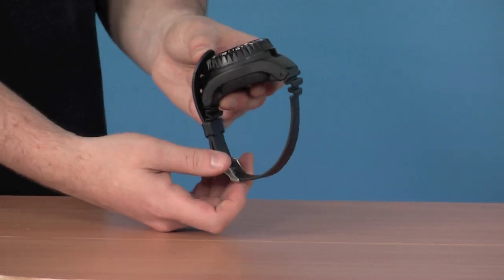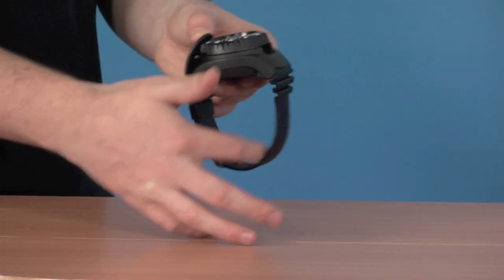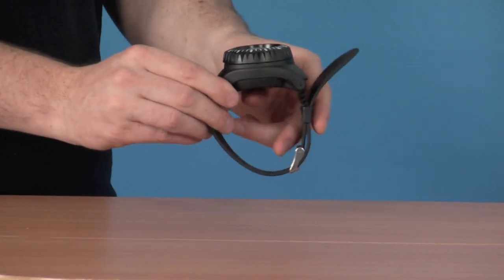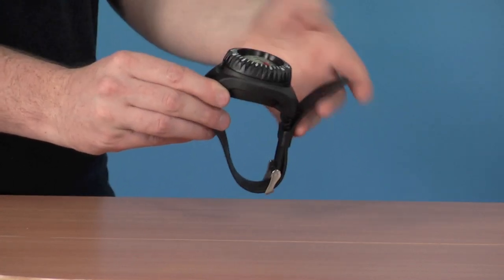So as you can see this is a wrist mounted compass, got a nice large wrist strap here. Also with that size makes it ideal to be worn over your dry suit cuff as well as a wet suit cuff.